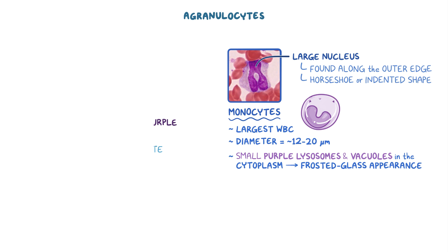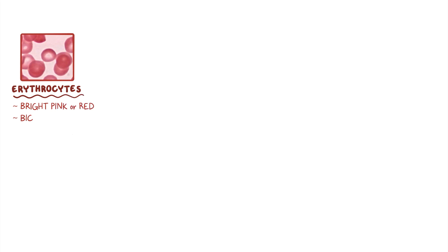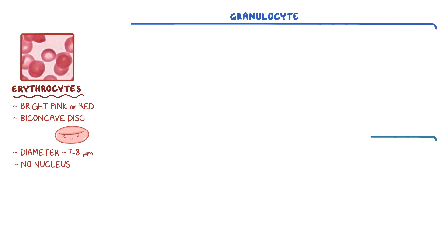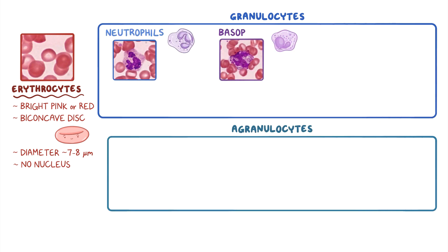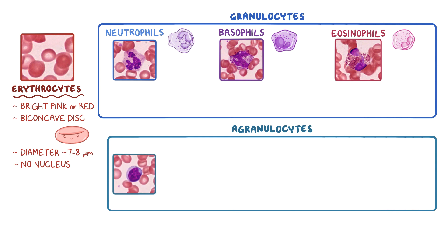Alright, quick recap. When stained with Wright stain, erythrocytes are bright pink or red with a pale center due to their biconcave shape. Their diameter is about 7-8 micrometers and they don't have a nucleus. Leukocytes are divided into granulocytes and agranulocytes. The granulocytes include neutrophils, basophils, and eosinophils, and agranulocytes include lymphocytes and monocytes.